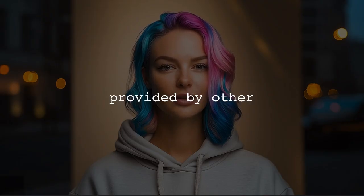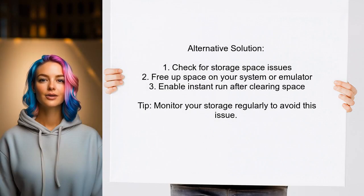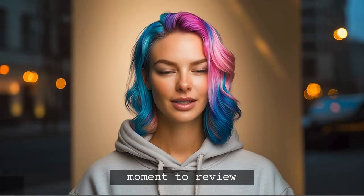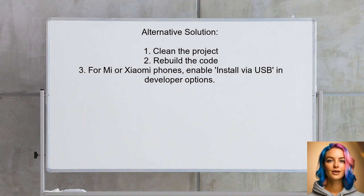Let's look at the answers provided by other users. One user shared their experience with a similar error — they discovered that their system or emulator had run out of storage space, which prevented the APK from installing. After freeing up some space, they were able to enable instant run successfully. Another user found success by cleaning the project and then rebuilding the code. They also mentioned that for Mi or Xiaomi phones, enabling 'Install via USB' in the developer options resolved the issue.